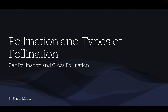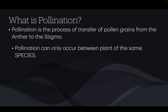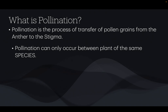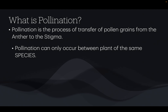In today's video I'll be explaining pollination and types of pollination. Pollination is the process of transfer of pollen grains from the anther to the stigma. Pollination can only occur between plants of the same species. It involves transfer of pollen grains from one flower to the same flower, or from one flower to another flower of the same plant, or from a flower of one plant to a flower of another plant.